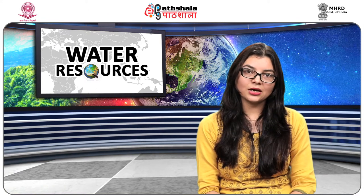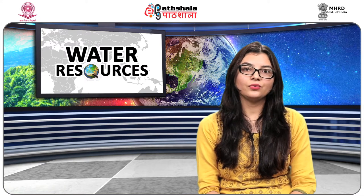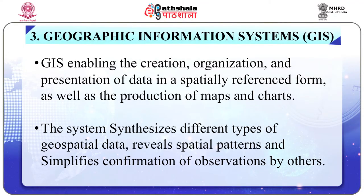Remote sensing data in conjunction with collateral data helps in delineation of ridge lines, characterization, prioritization, identification of erosion-prone areas, and geographic information system analysis. GIS enables the creation, organization and presentation of data in a spatially referenced form as well as the production of maps and charts. The system synthesizes different types of geospatial data, reveals spatial patterns and simplifies confirmation of observations by others.